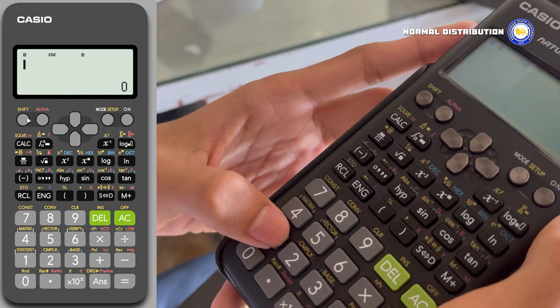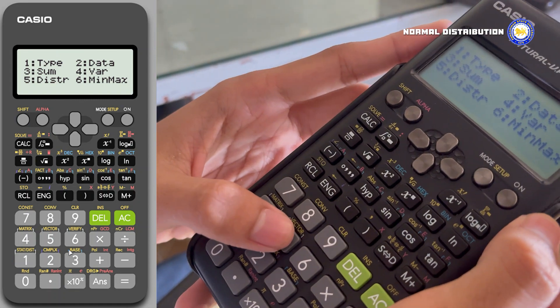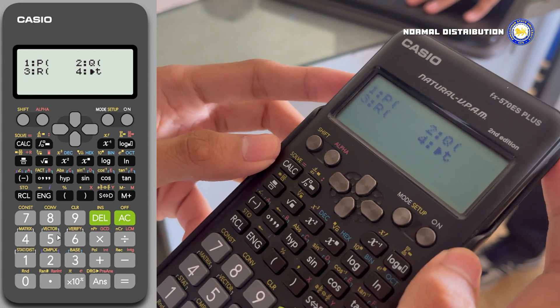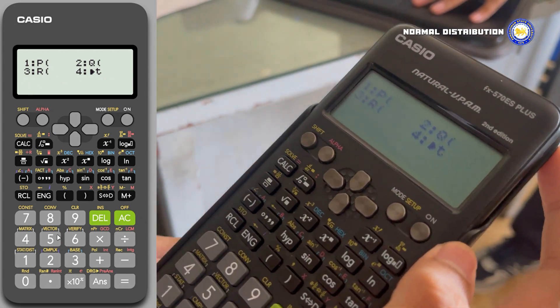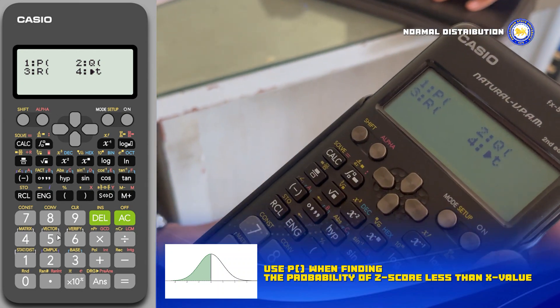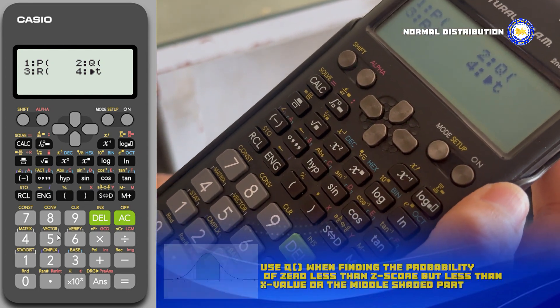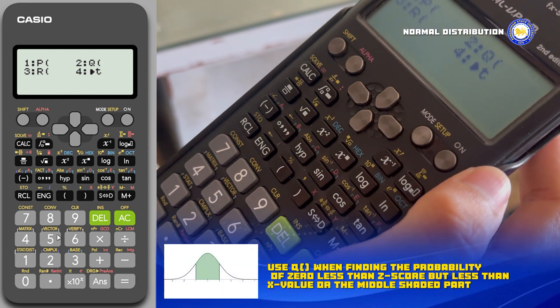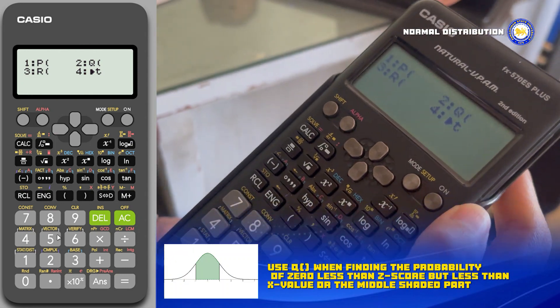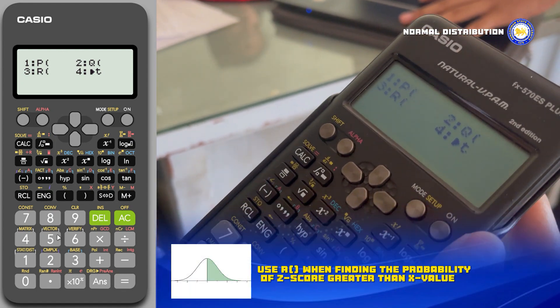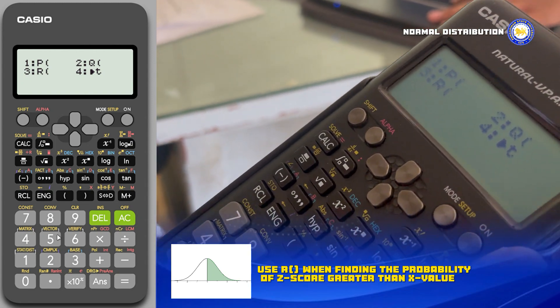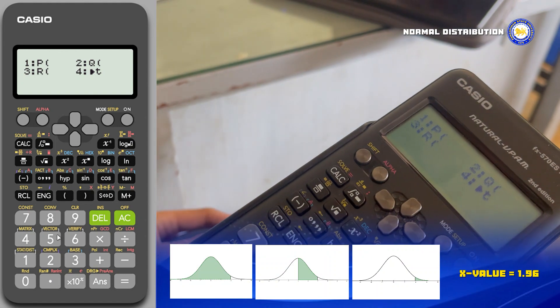Now press Shift and 1 for Stat, and now we are going to pick number 5 which is Distribution, and here we go. We can use three items based on your problem. Use number 1, P, when finding the probability of a score less than the x value as shown on the screen. Use number 2, Q, when finding the probability of zero less than a score but less than x value, or the middle shaded part as shown on the screen. Use 3, R, when finding the probability of a score greater than x value as shown on the screen.